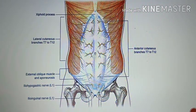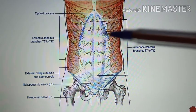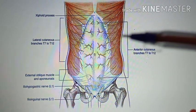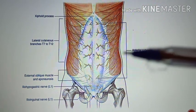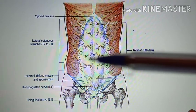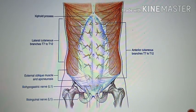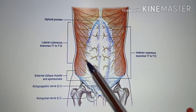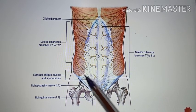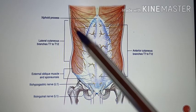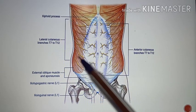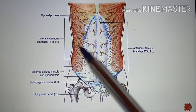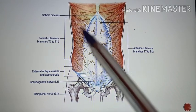As the anterior rami proceed, they give off the lateral cutaneous branch and terminate as the anterior cutaneous branch, supplying the skin. In this diagram, all these are the spinal nerves supplying the anterolateral abdominal wall — from thoracic 7 to thoracic 12. T12 is the subcostal nerve, while T7 to T11 are the intercostal nerves.